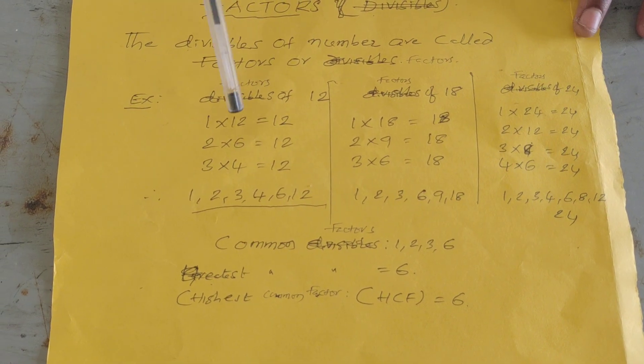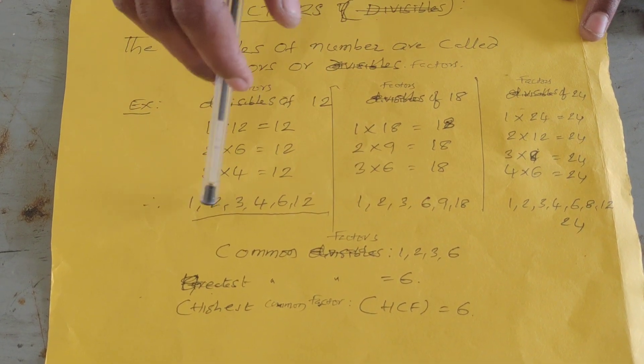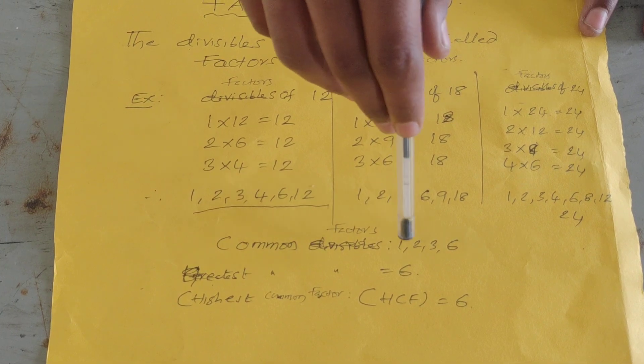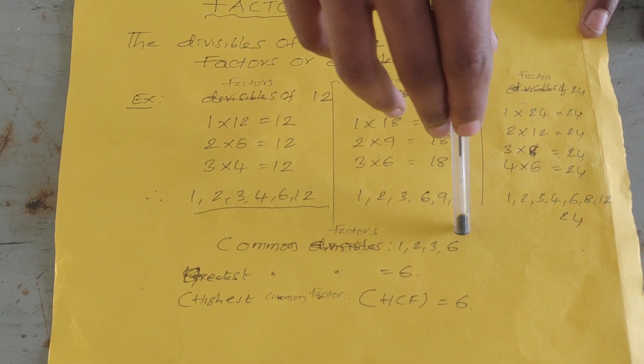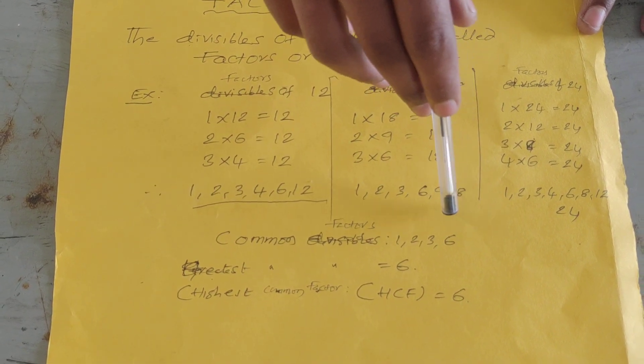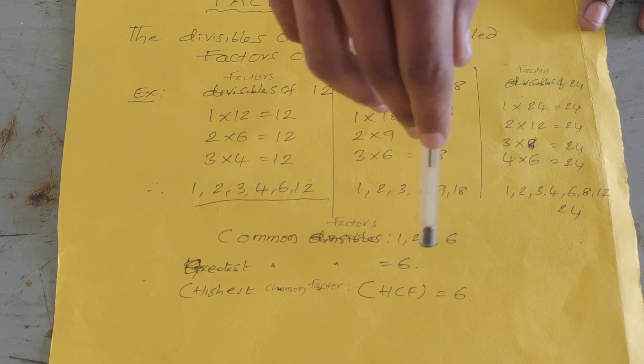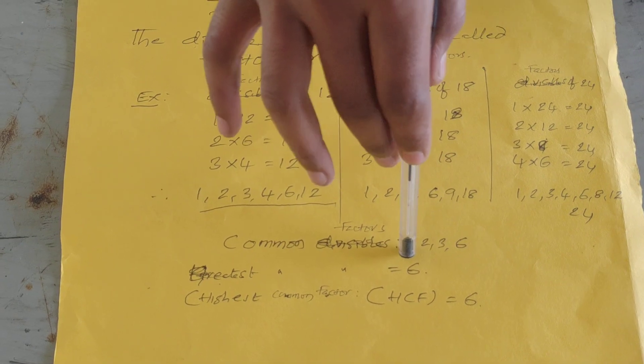We are grouping these 3 factors. We can observe some common factors. They are 1, 2, 3, and 6. In this, the highest common factor — nothing but HCF — is 6.